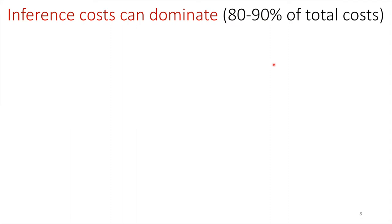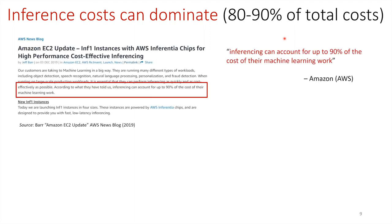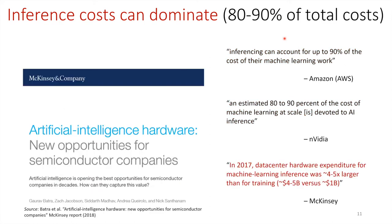Why is inference relevant? If a machine learning engineer builds a model, it can be deployed to the cloud and used in inference mode by hundreds of thousands or even millions of users. This leads to estimates that 80 to 90% of the total cost of machine learning — in hardware cost as well as energy cost — is due to inference in large-scale models. This is consistent across estimates from Amazon, Nvidia, McKinsey, and others. So even though we're only tackling inference, that's not far from a trivial part of the overall energy consumption.